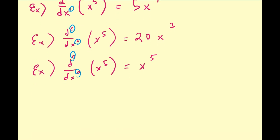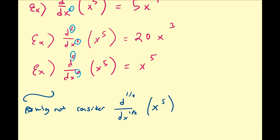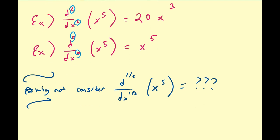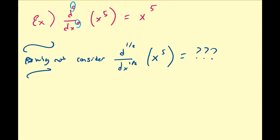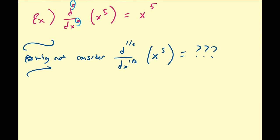So let's address that question. Why not consider the half derivative of x to the fifth? If we want to consider the half derivative, that means we have to have some pattern to extend to the set of complex numbers past the set of natural numbers. So as a good example, let us consider the general power rule.